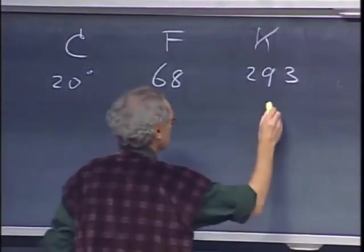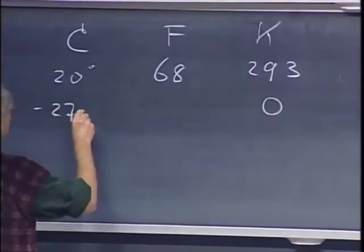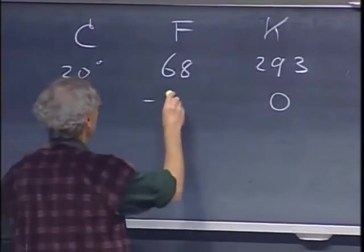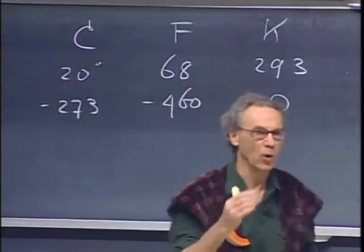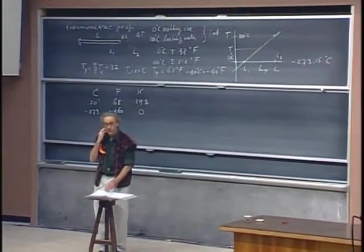And if we take zero Kelvin, then we would have minus two hundred and seventy-three point one five, but let's leave that off for now, and it is approximately minus four hundred and sixty. We will almost always work with degrees Kelvin in physics, and we will discuss that in more detail Friday.